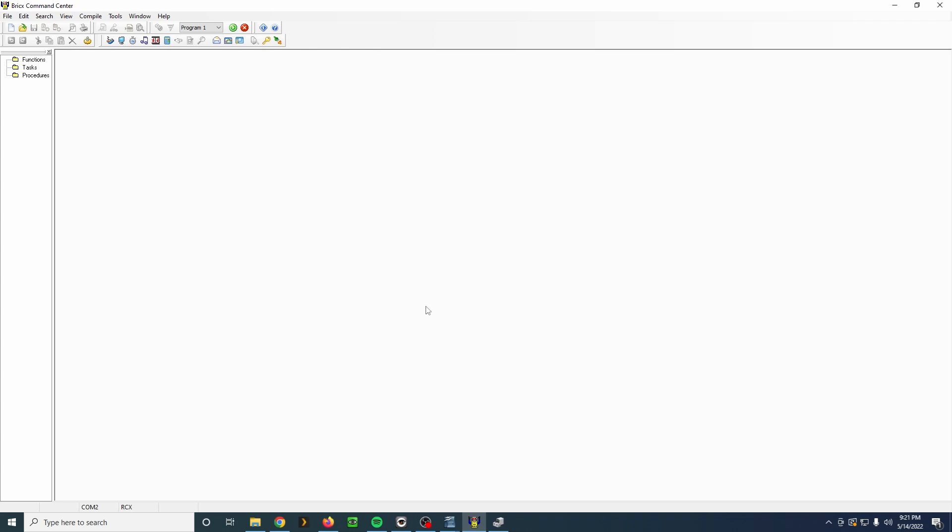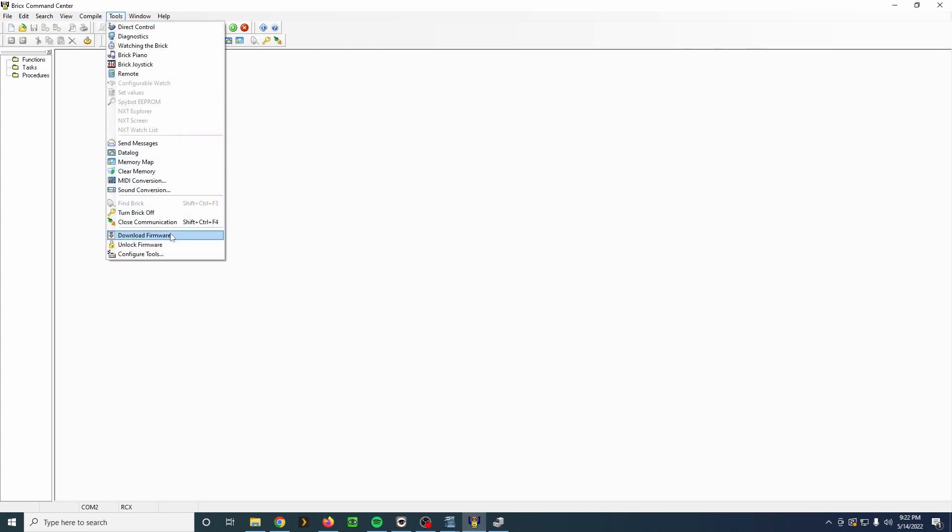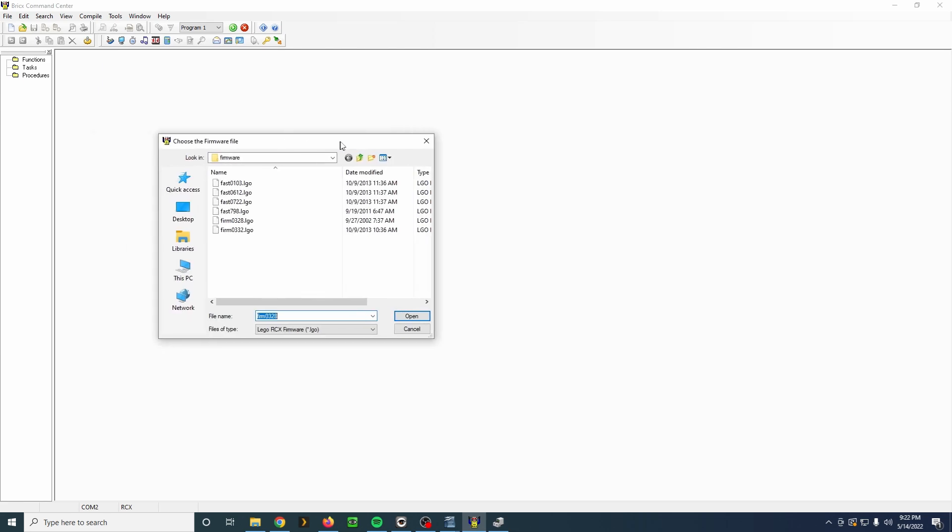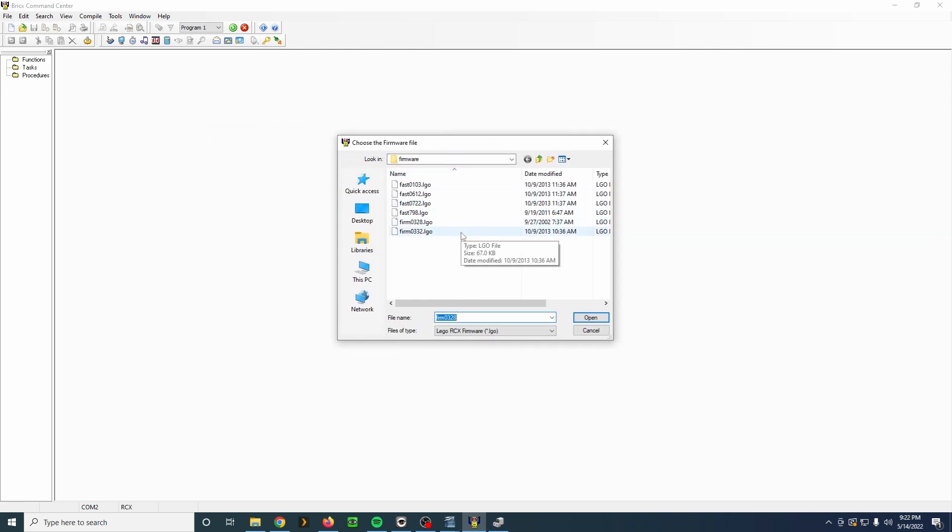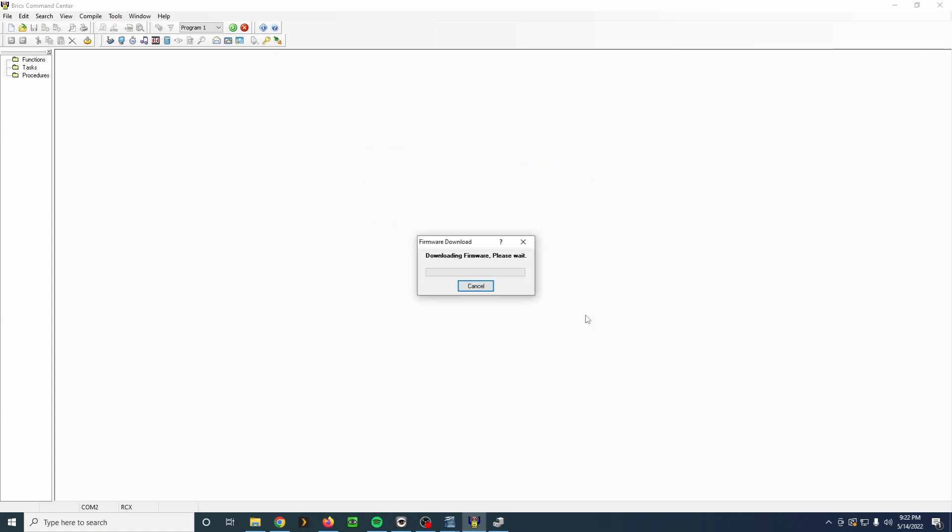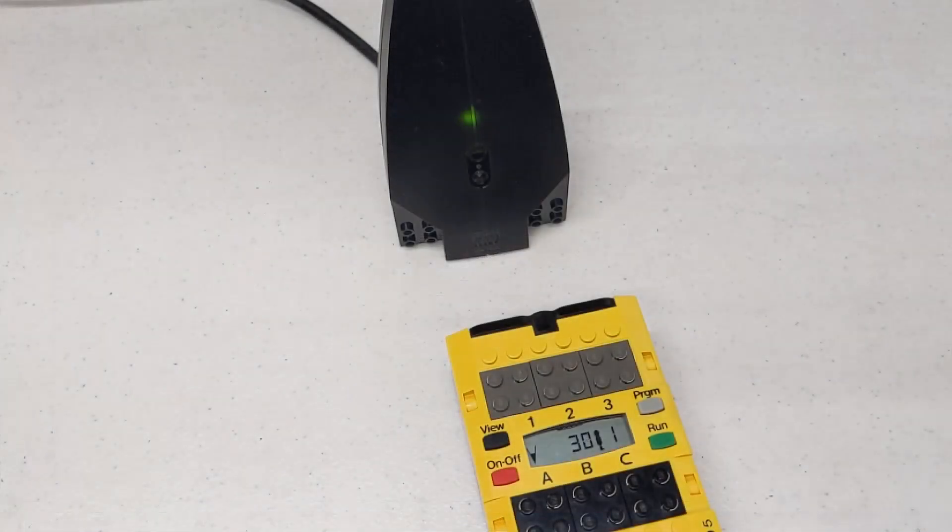Once the software is open, go to Tools, and then Download Firmware. The latest official firmware is version 0332. This should take about 5 minutes. The screen will count up from zero until the download is complete. The unit may start a block over if there is an issue.